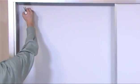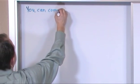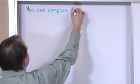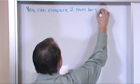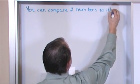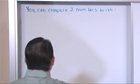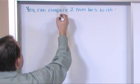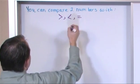You can compare two numbers with the following three symbols, and this is the part that usually trips people up. Greater than symbol, less than symbol, and of course the equal to symbol.